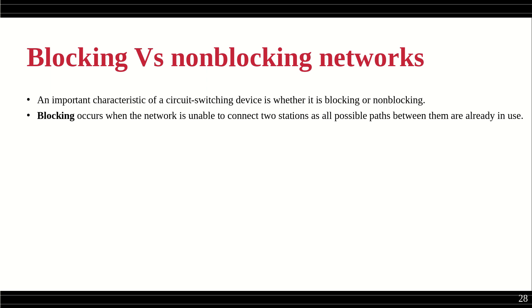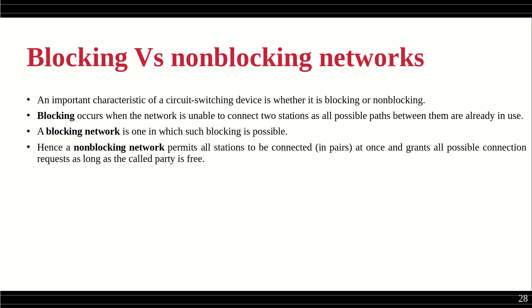Blocking occurs when the network is unable to connect two stations because all possible paths between them are already in use. For example, A wants to communicate with B, but all channels between A and B are occupied — so the network cannot establish a connection even though A and B are both free. A blocking network is one where such a scenario occurs. A non-blocking network permits all stations to be connected whenever they want to communicate.